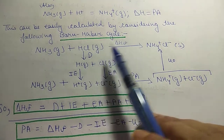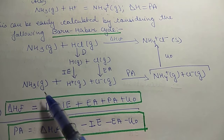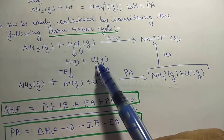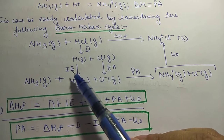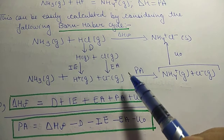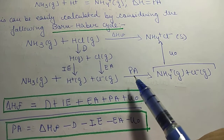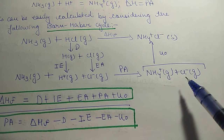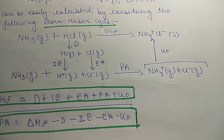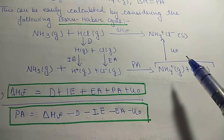The direct reaction is: NH₃(g) plus HCl(g) gives NH₄Cl with ΔHf. In the cyclic form, HCl first dissociates into H and Cl. Then H is ionized to H⁺ using ionization energy, and Cl is converted to Cl⁻ releasing electron affinity energy. These combine with NH₃ — where the ΔH of this combination step is the proton affinity — giving NH₄⁺ plus Cl⁻ in gaseous form, which then combine releasing lattice energy to form solid NH₄Cl.